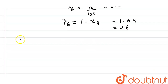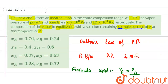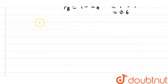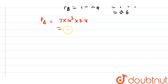Now we calculate the partial pressure of A. The pure vapor pressure of A is 7×10³ and the pure vapor pressure of B is 12×10³. So P_A = 7×10³ × 0.4 = 2.8×10³ Pascal.